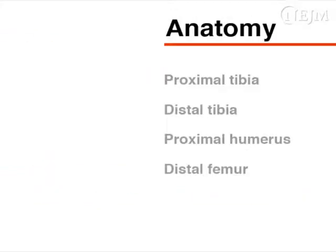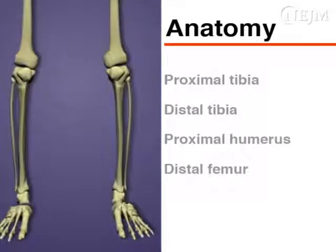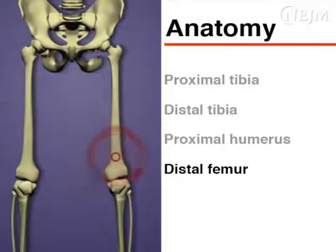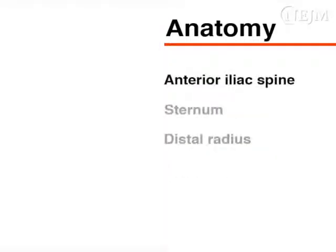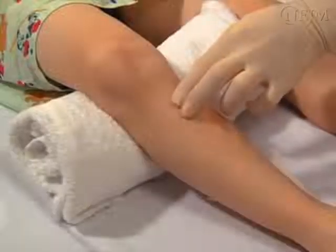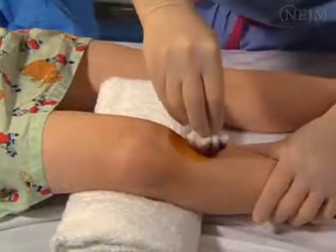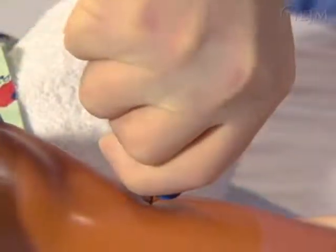Several anatomic sites may be used for intraosseous cannulation. The most commonly used include the proximal tibia, the distal tibia, the proximal humerus, and the distal femur. The anterior iliac spine is used less commonly. The sternum and distal radius have been identified for use in adults, but not children. We will review anatomic landmarks at the most commonly used sites before demonstrating preparation and cannula insertion.